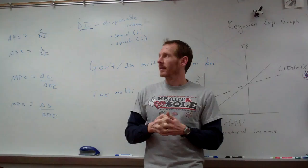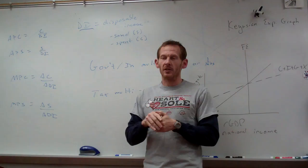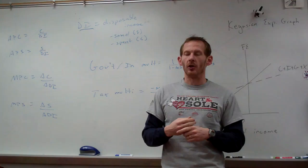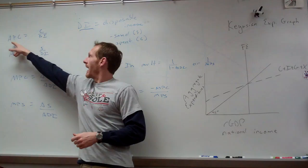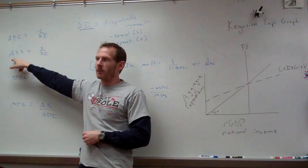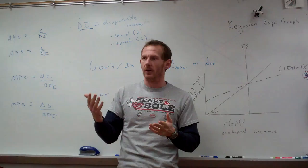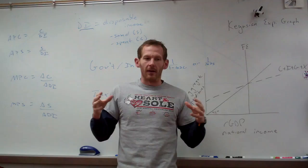The multiplier effect uses a couple of different things. We have a propensity to consume — specifically, an average propensity to consume. With the average dollar, how much do we spend and how much do we consume? The simple formula is APC, the average propensity to consume, equals C (consumption) over DI (disposable income). Similarly, APS, the average propensity to save, equals savings over DI. This tells economists for all the dollars we have, how much we save and how much we consume.